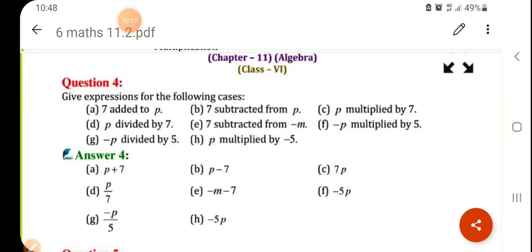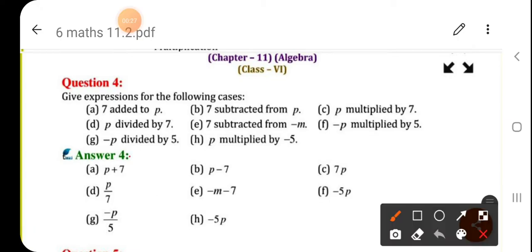7 added to P. So 7 you have to add to the letter P. So it is P plus 7. 7 subtracted from P. So from P you have to subtract 7. So P minus 7.